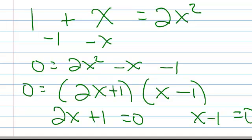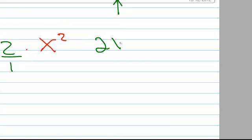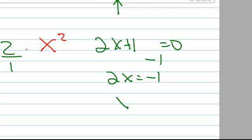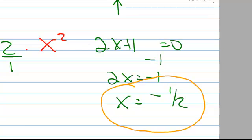And then you set each factor equal to 0 and solve. And I'm running out of room here, so let me move up here. We've got a 2x plus 1 equals 0. Subtract 1. Divide by 2. So we get x equals negative 1 half. So there's one of our solutions. Let me just circle that so I don't lose that.